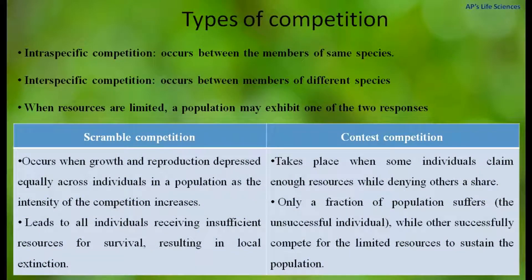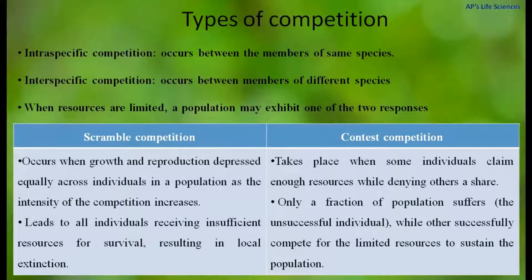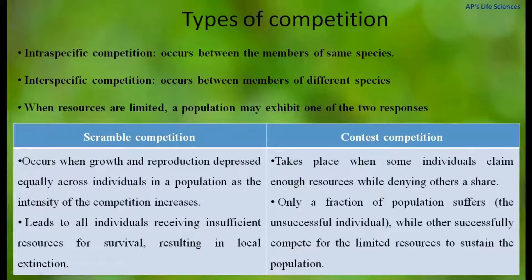In scramble competition, growth and reproduction are depressed equally across all individuals in a population as the intensity of competition increases. This leads to all individuals receiving insufficient resources for survival, resulting in local extinction — that is, all individuals in the population are equally affected by the depletion of resources.